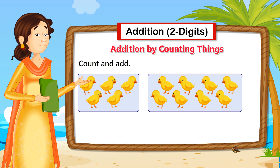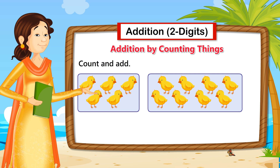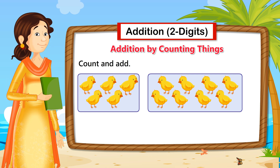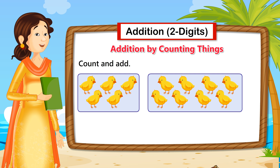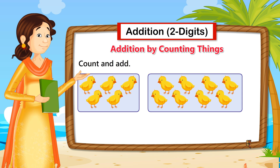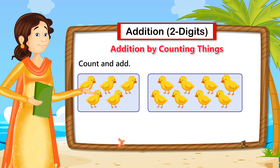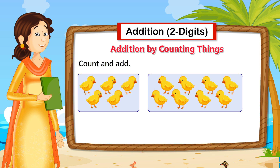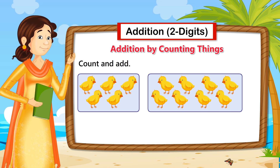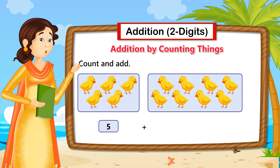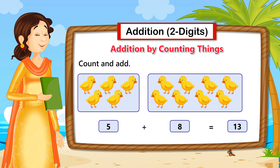The number of chicks in the first box is 1, 2, 3, 4, 5. The number of chicks in the second box is 1, 2, 3, 4, 5, 6, 7, 8. 5 chicks plus 8 chicks equal 13 chicks.